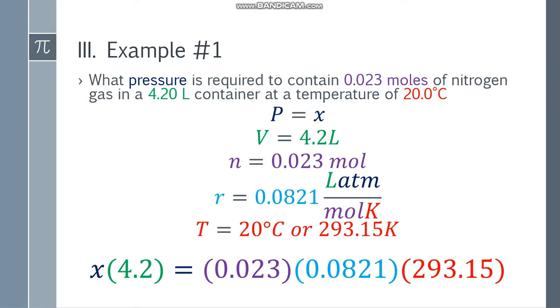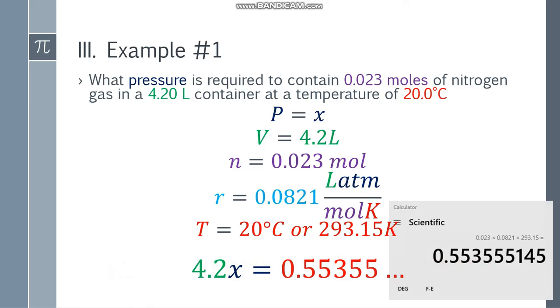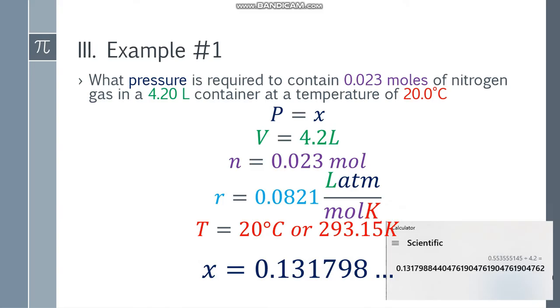Gamitin natin yung formula. PV is equal to nRT. That will be x times 4.2. Color-coded naman siya, makikita nyo. 0.023 times 0.0821, and multiply mo siya sa 293.15. Tapat dito sa Kelvin, hindi sa 20. Mamamali ka talaga pag naka-base ka sa Celsius. Simplify mo siya. Yung nasa kaliwa, that will be 4.2x. At yung sa kanan, multiply mo lang sila directly, and you will get an answer of 0.553555145.